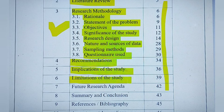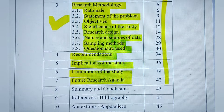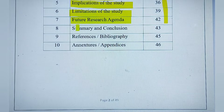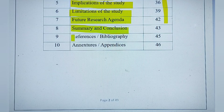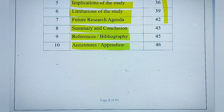The 10 required headings are: introduction, review of literature, research methodology, results and discussions, summary and conclusion, recommendation, implementation, limitation, references, and annexures — just like we write in the synopsis.